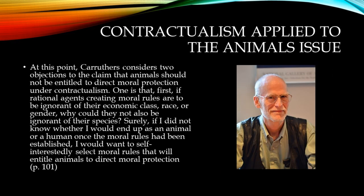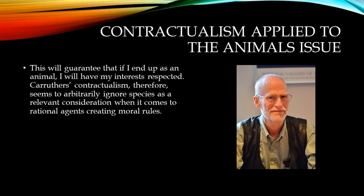At this point, Carruthers considers two objections to the claim that animals should not be entitled to direct moral protection under contractualism. The first is: if rational agents creating moral rules are to be ignorant of their economic class, race, or gender, why could they not also be ignorant of their species? Surely, if I did not know whether I would end up as an animal or a human once the moral rules had been established, I would self-interestedly select moral rules that will entitle animals to direct moral protection. Carruthers' contractualism, therefore, seems to arbitrarily ignore species as a relevant consideration.